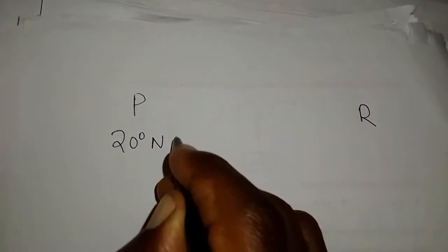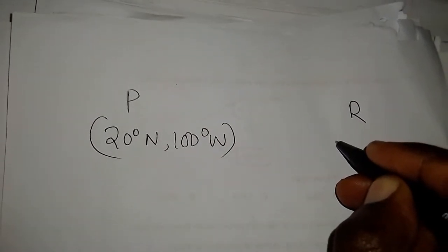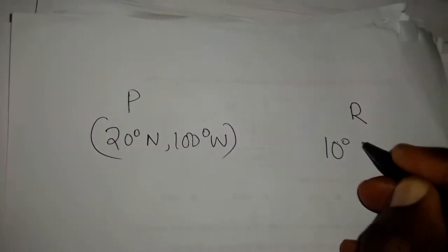Have a look at the following. I may have a point like P and a point like R. The coordinates of point P can be 20 degrees north and 100 degrees west. And I may have a point R whose coordinates are 10 degrees south and 100 degrees west. Now, there's no need for you to make a sketch. Just have a look at the points and ask yourself, are they on the same latitude or longitude? What is really happening?